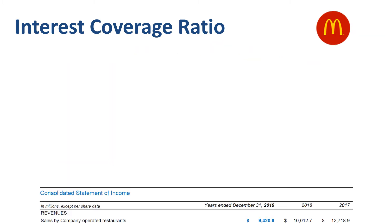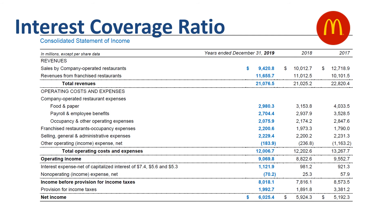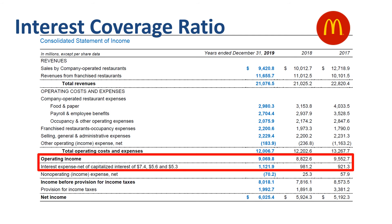McDonald's: taking the consolidated statement of income, we locate the lines for operating income and interest expense, then divide. The interest coverage ratio was 8 for 2019, down from 9 for 2018, and 10 for 2017. For every dollar of interest expense, there was between $8 and $10 of operating income to easily cover it. Those were two companies for which we can easily calculate the interest coverage ratio.